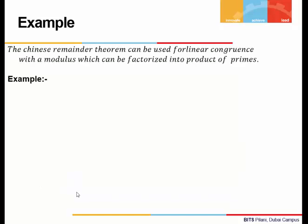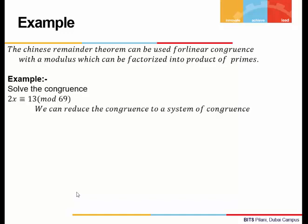Chinese remainder theorem can also be used for linear congruence with modulus which can be factorized into product of primes. Let's look at an example. If we are given, solve 2x ≡ 13 (mod 69), we can reduce the congruence to a system of congruence. As 69 = 3 × 23, we get 2x ≡ 13 (mod 3) and 2x ≡ 13 (mod 23).